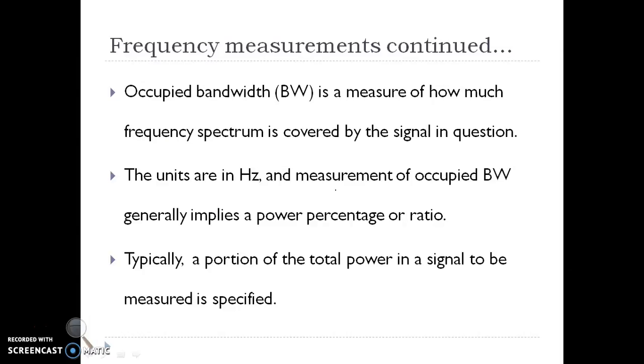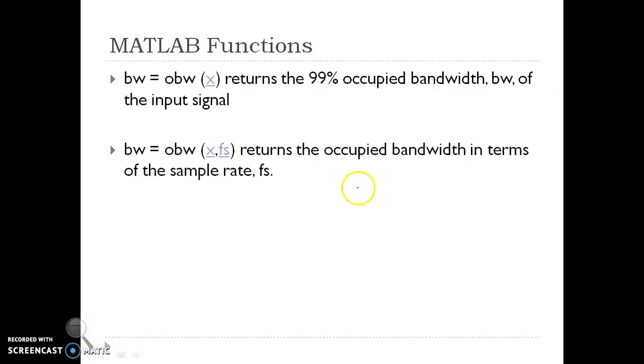Occupied bandwidth is a measure of how much frequency spectrum is covered by the signal in question. The units are in Hertz and bandwidth of occupied signal generally implies a power percentage or ratio. Typically, a portion of the total power in a signal to be measured is specified.